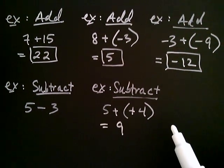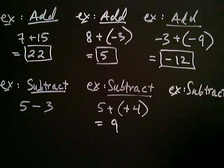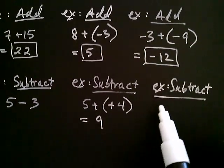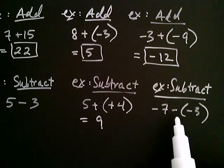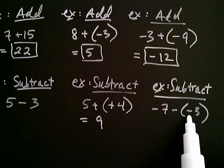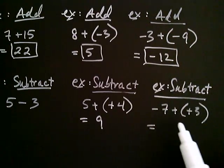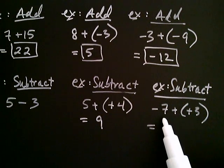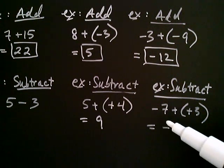This technique works for more complicated situations too. Say we have negative seven minus negative three. Since we're subtracting a negative, we convert it to addition: negative seven plus positive three. Now it's addition, so we think about our bank account — a withdrawal of seven added to a deposit of three gives a net withdrawal of four. So the answer is negative four, because the withdrawal was larger than the deposit.